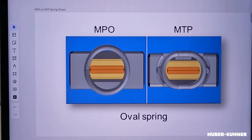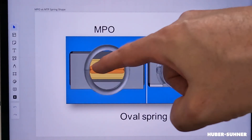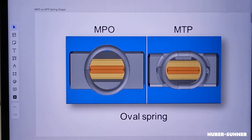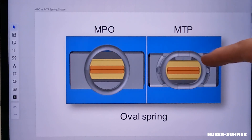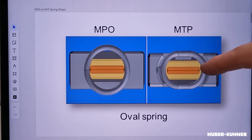And that brings us to the next difference, because the MPO connector actually uses a round spring. And as you can see, that spring is incredibly close to the ribbon fiber. And if the spring then does what it's supposed to do, it can actually rub up against the ribbon fiber and damage it.